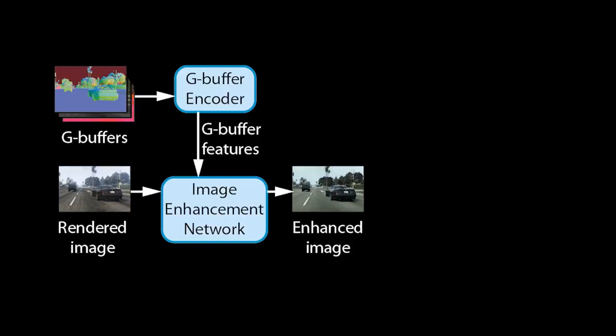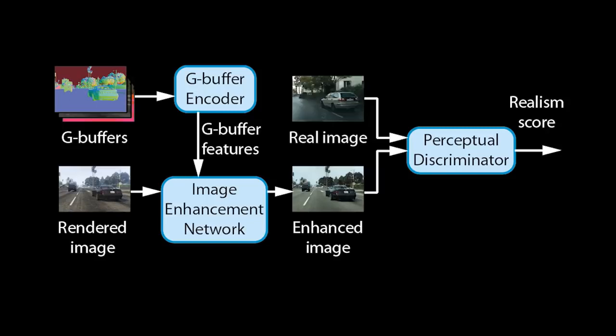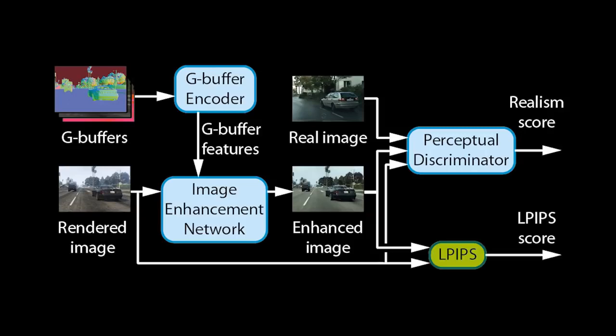To train our networks for enhancing realism, we employ a perceptual discriminator. For each image it takes in, it produces a realism score. To make it understand what the real world looks like, we also feed it real photos. To ensure that our networks retain the structure of rendered images, we further add them to the discriminator inputs and employ a perceptual loss.